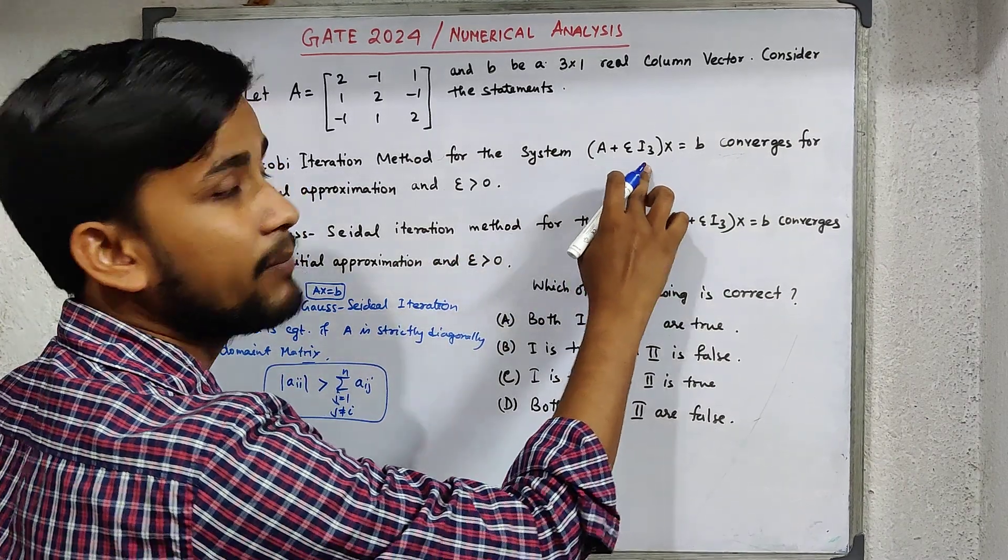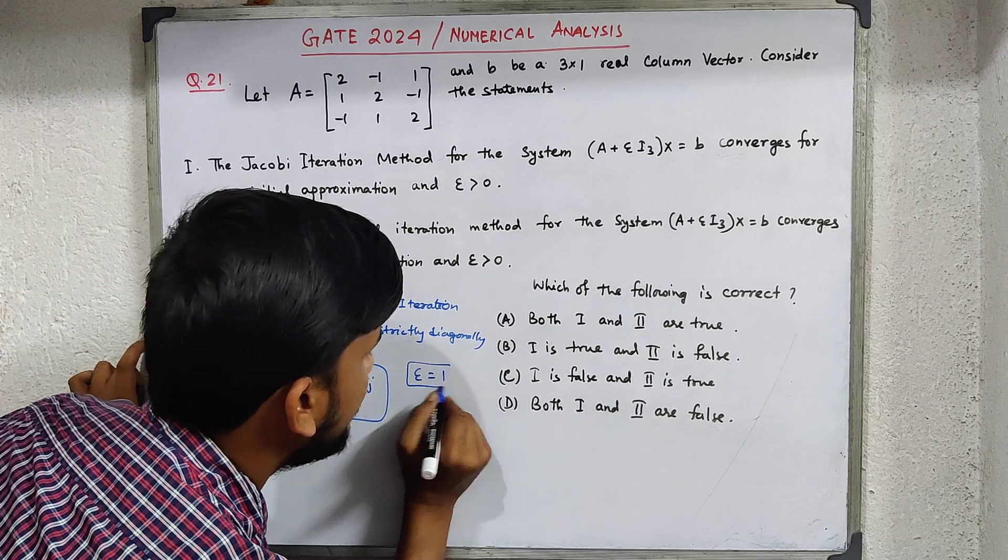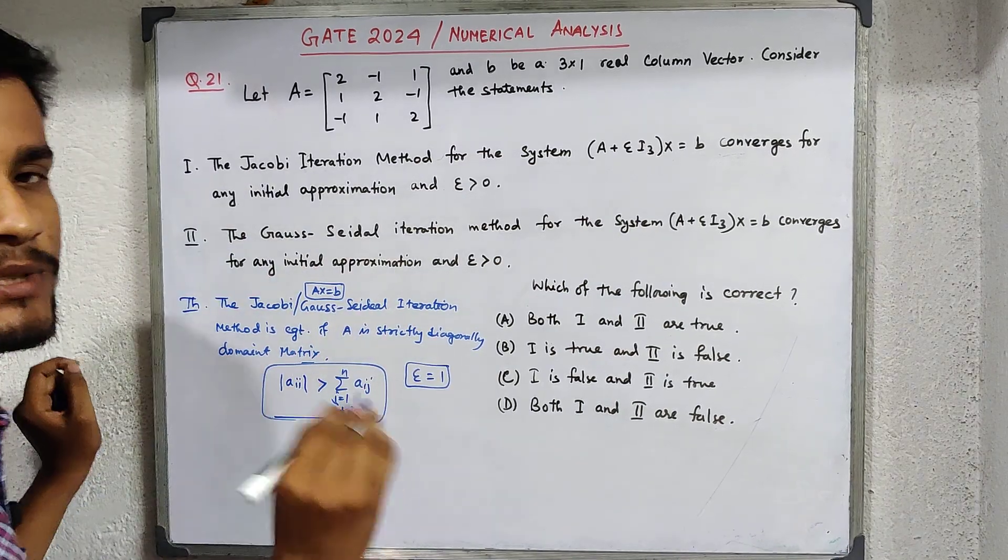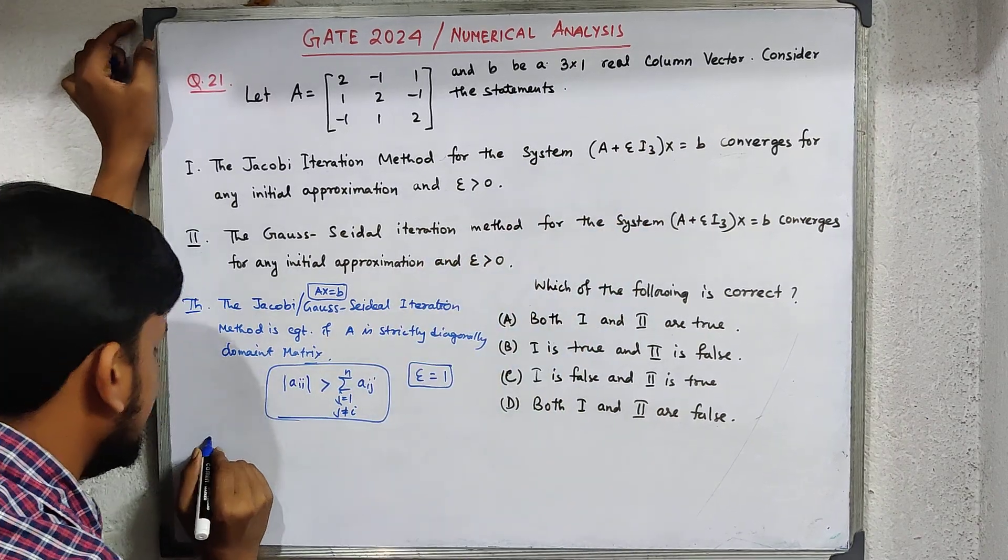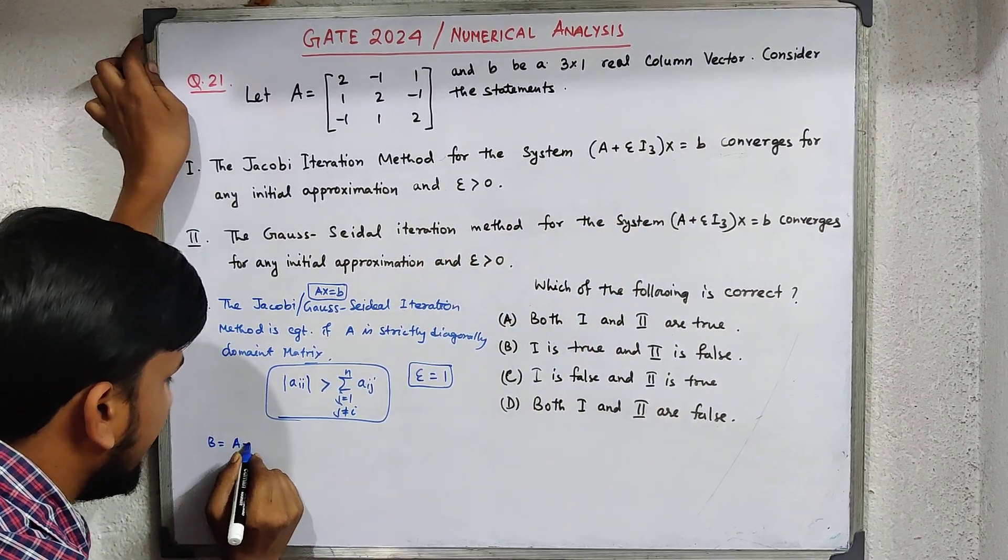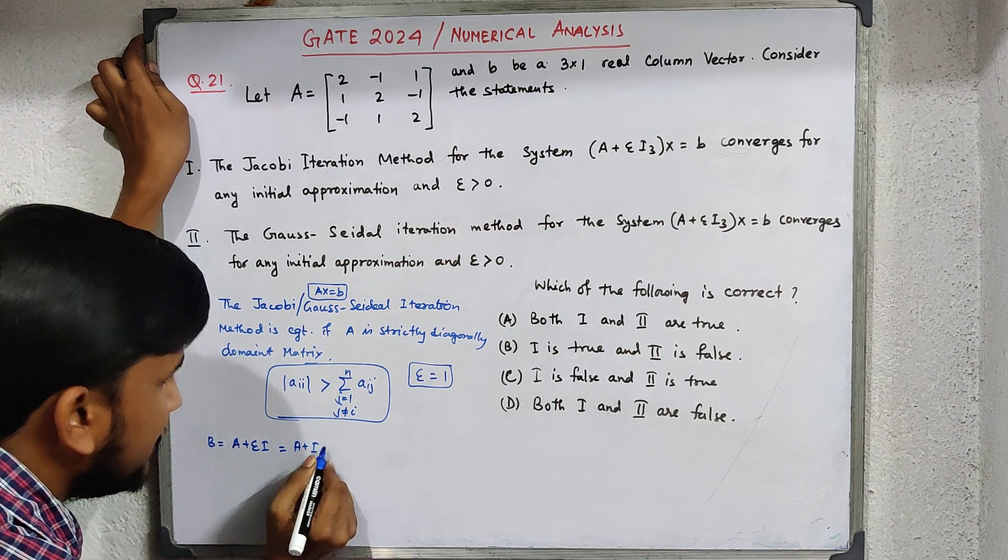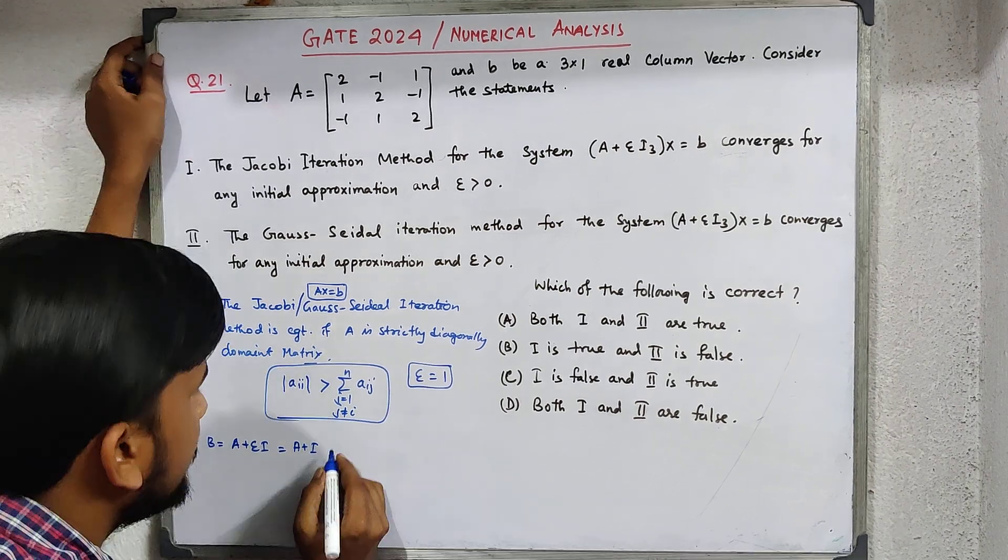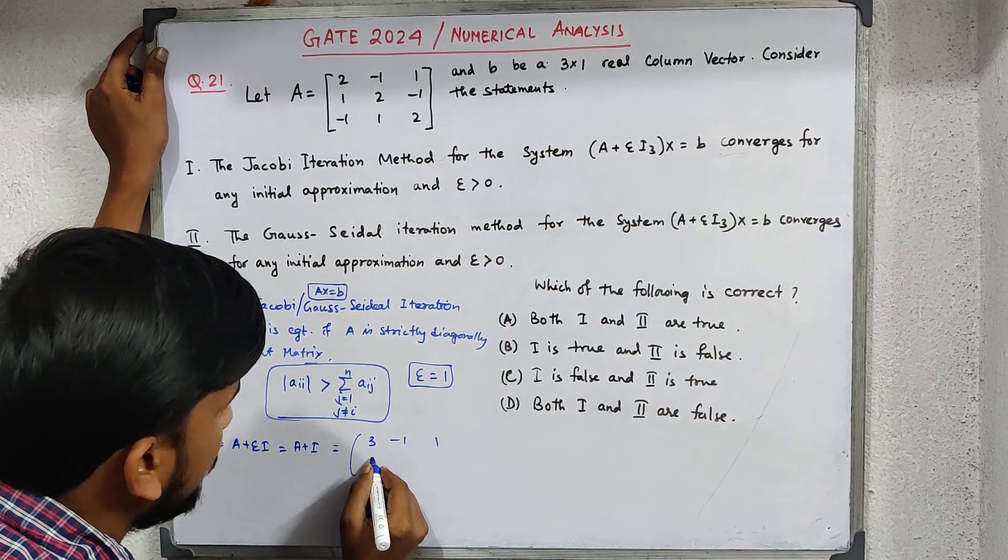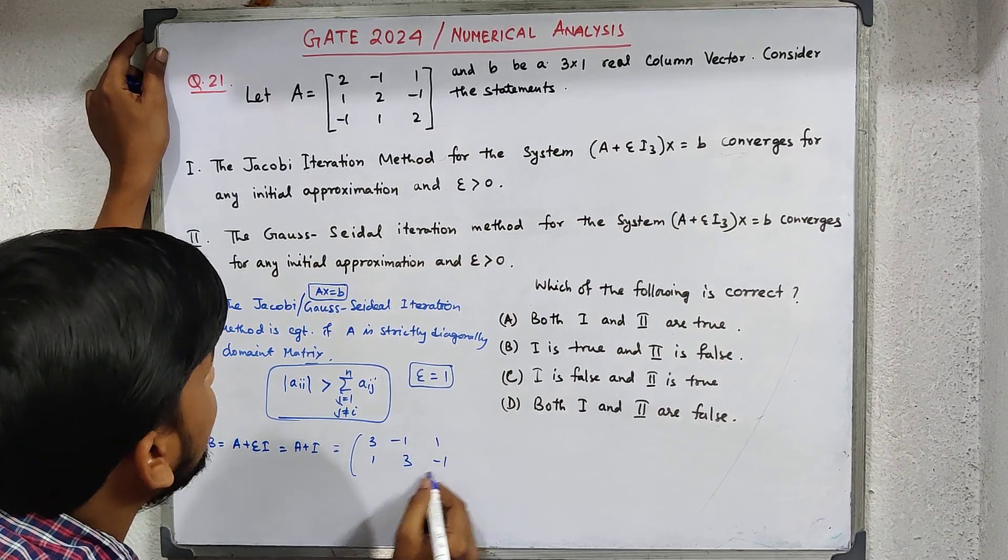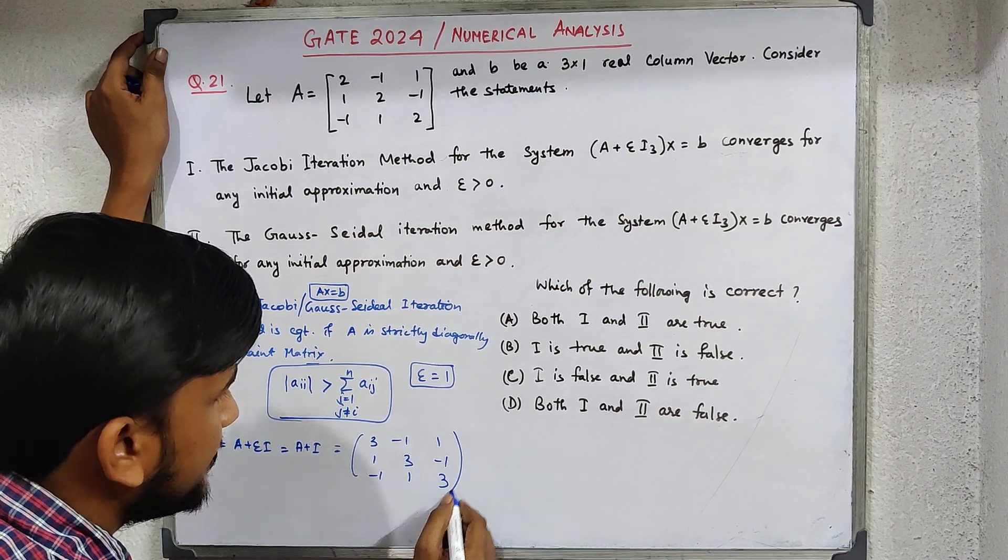For the system A+εI with ε>0, it's easiest to take ε=1. Then the matrix A+εI becomes, suppose B is the matrix A+I. This equals A+I, which gives us the matrix [3, -1, 1; 1, 3, -1; -1, 1, 3].